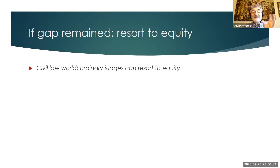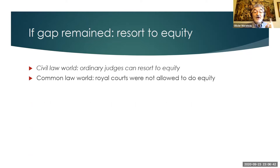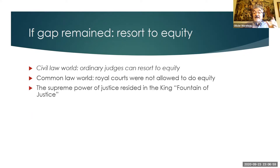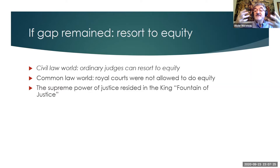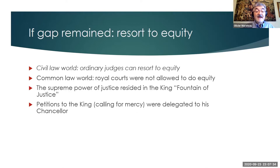In the civil law world, ordinary judges can resort to equity when the law is silent. In the common law world, the royal courts were not allowed to do equity — they had to perform within the words of the writ. The big complaint was that these courts, supposed to give justice in the king's name, were actually refusing to take certain cases. The supreme power of justice resided in the king himself, described in medieval times as a fountain of justice, so parties sought relief by petitioning the king.